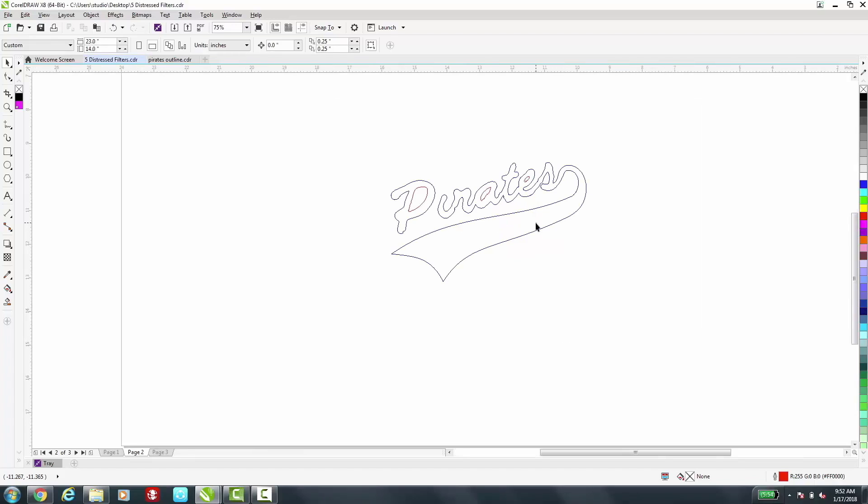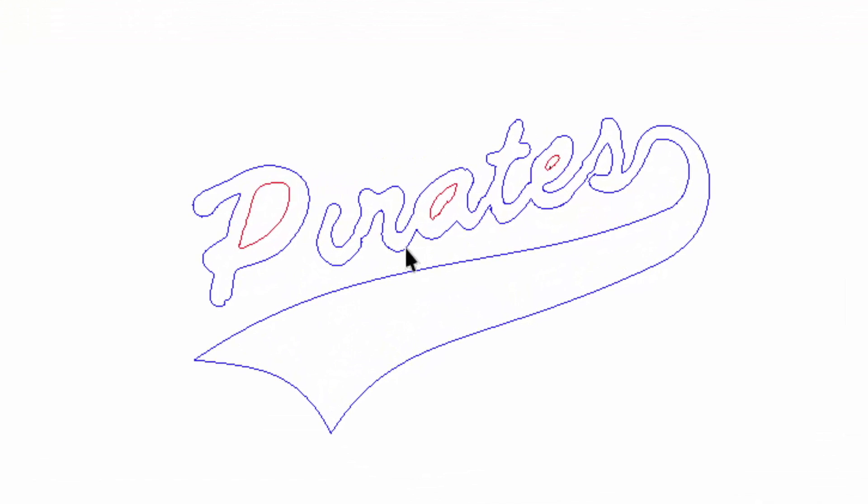On my second page, I have the file that we're going to be applying the filters to. I have the file preset with our blue kiss cut, so that way it only cuts through the top layer of the material, not all the way through.